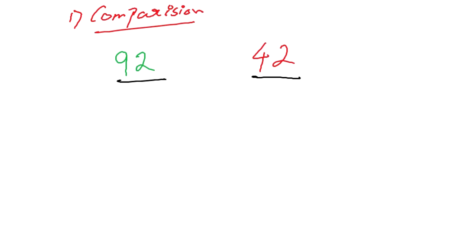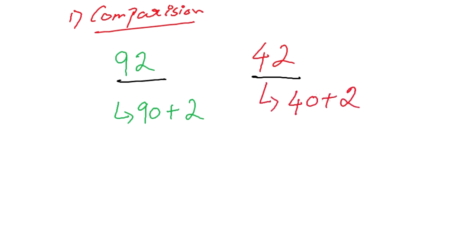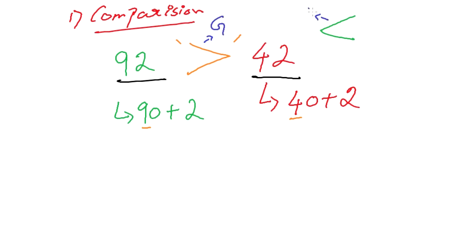Let us go theoretically and find how 92 is greater than 42. See how each number is split: 92 can be written as 90 plus 2. In the same fashion, 42 can be written as 40 plus 2. Now, compare the first part: 90 is greater than 40 because 9 comes after 4. So 92 is greater than 42, and you represent this with the greater than symbol. The smaller than symbol is represented as the reverse of greater than.